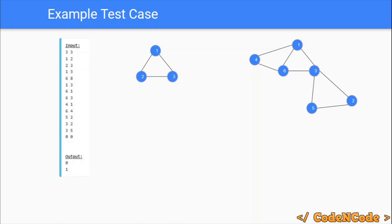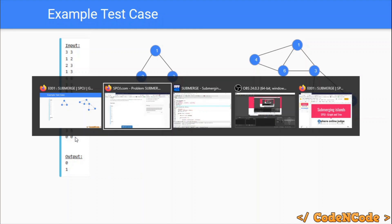We have to count and report the total number of articulation points in each graph. The input ends when we are given zero zero — when both N and M are zero, the input terminates.